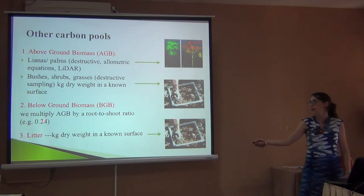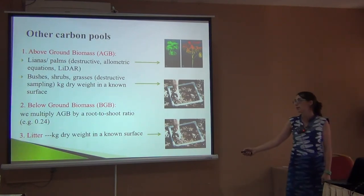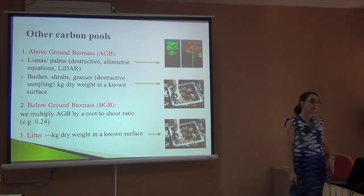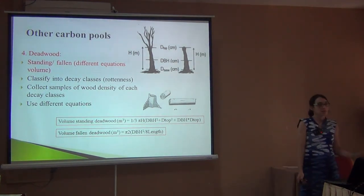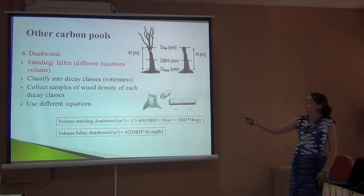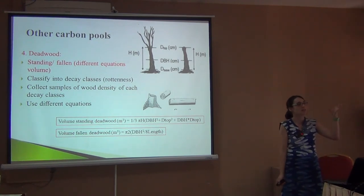For roots, we usually use a ratio available in the literature — about 0.25 of what we have above the ground, though we can argue about how accurate this is for some regions. For litter, people usually just harvest it: collect all the litter in a small patch, dry it, weigh it, and know the biomass. For deadwood, it depends whether it's standing or fallen. If it's standing, we use an equation that models a cone shape — bigger at the bottom than the top — and the wood density is greater since it's not fully rotten.